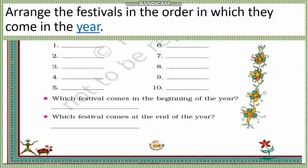We need to arrange them in order — meaning which festival comes first, write that first, then the next one after that, month-wise.